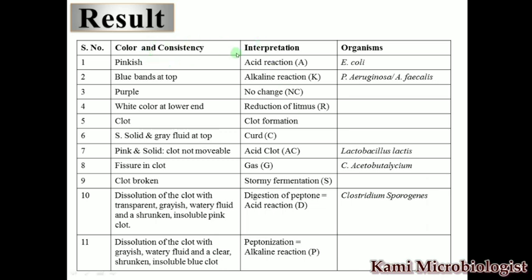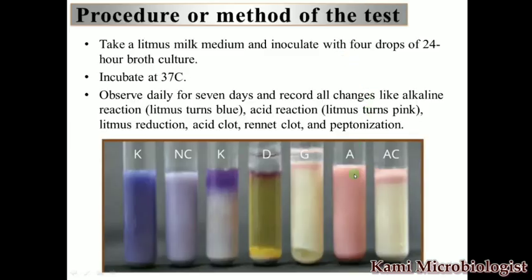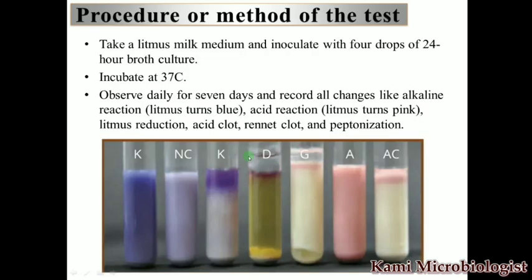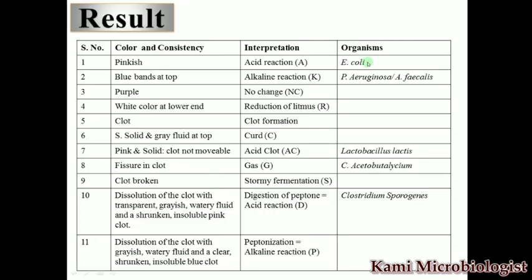The first result we mostly observe is pinkish color, meaning acid is produced — this is done by E. coli. Next is blue bands at the top, which is the alkaline reaction — this is the property of Pseudomonas aeruginosa or B. subtilis. Purple color means no changes — a negative reaction.